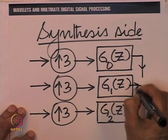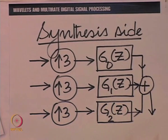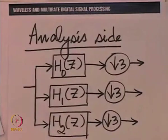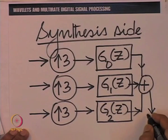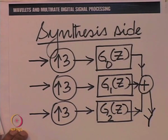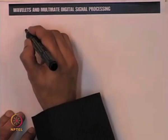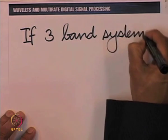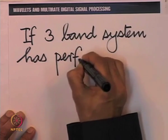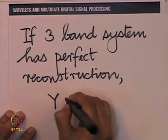The outputs are all summed. If on the analysis side we call the input x, what we expect to get at the output y is the same as x if the system is a perfect reconstruction system. So if the three-band system is a perfect reconstruction system, y equals x.